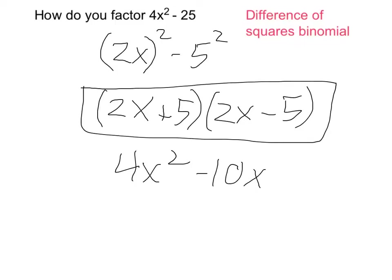This times this is equal to positive 10x. So what's going to happen between these two is they're going to cancel each other out. Finally, the 5 times a negative 5 is going to give us a minus 25.